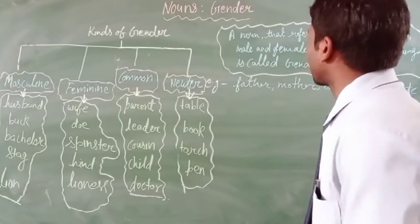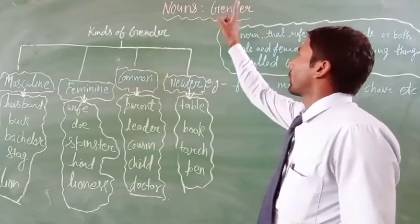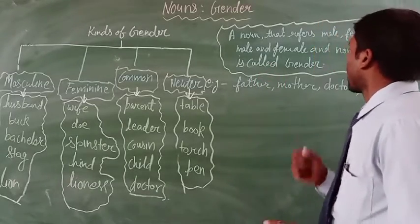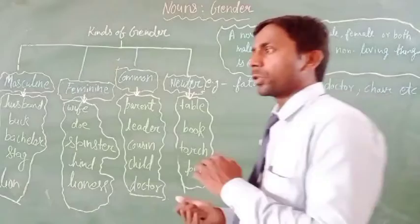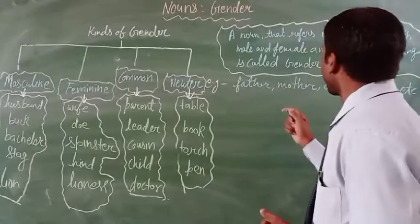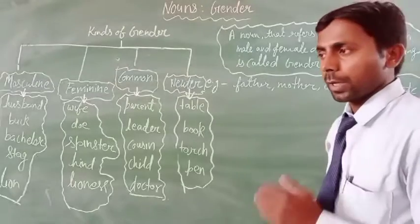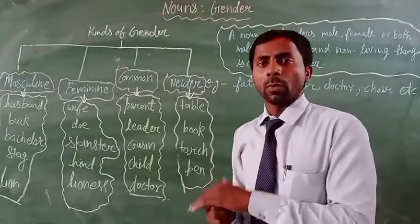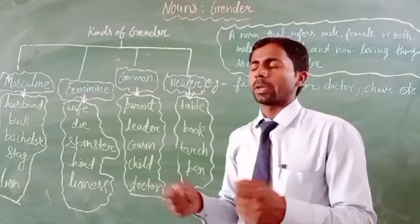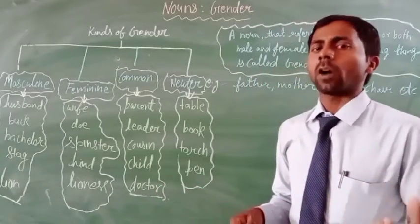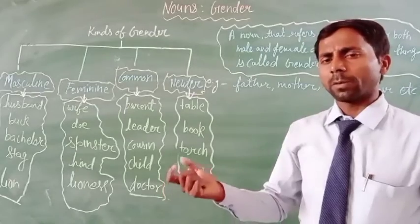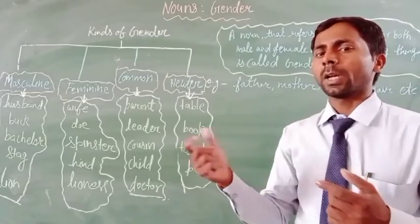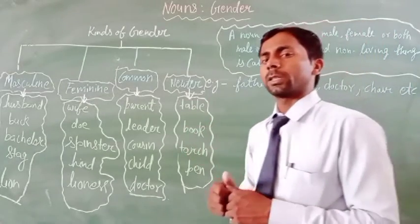First, let's look at the definition of gender. A noun that refers to male, female, both male and female, and non-living things is called gender. It means gender is a word used for male, female, both male and female, and non-living things. Simply put, gender is a noun word that denotes male or female.